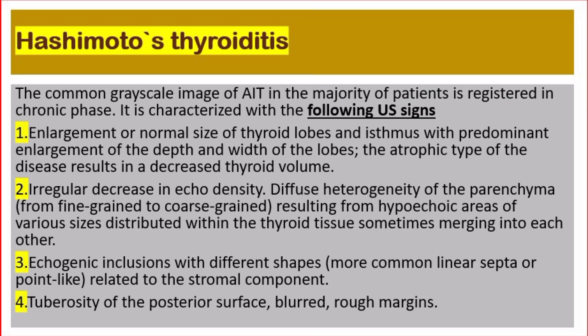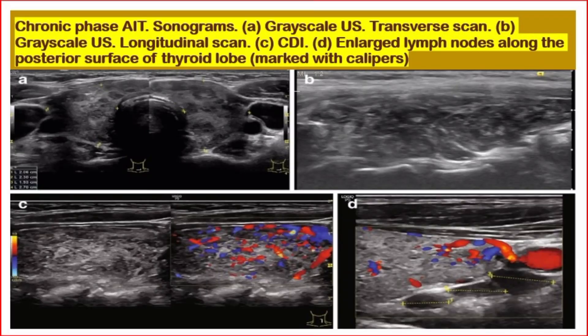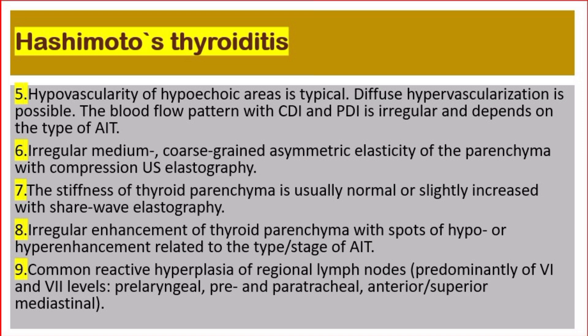Number three: echogenic inclusions with different shapes, more commonly linear septa or point-like, related to the stromal component. Number four: tuberosity of the posterior surface with blurred, rough margins. This picture shows chronic phase autoimmune thyroiditis sonograms — (a) gray scale ultrasound transverse scan, (b) gray scale ultrasound longitudinal scan, (c) color Doppler imaging, (d) enlarged lymph nodes along the posterior surface of the thyroid lobes.